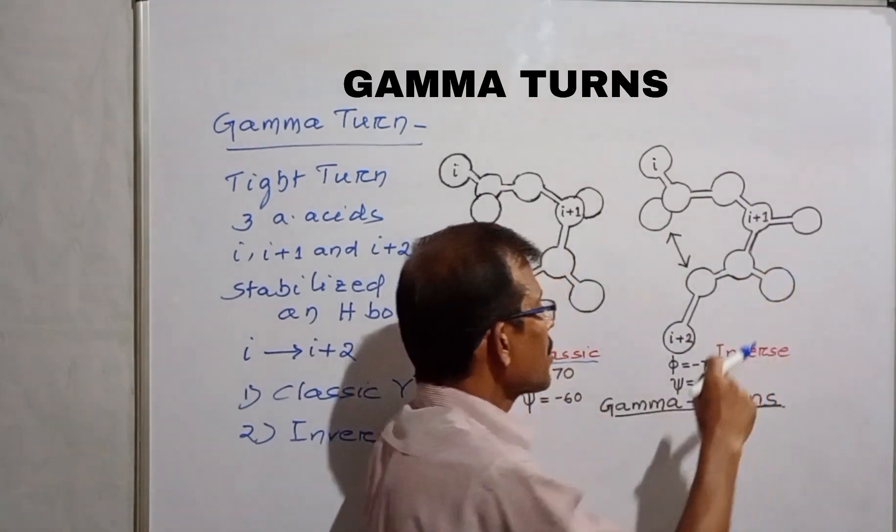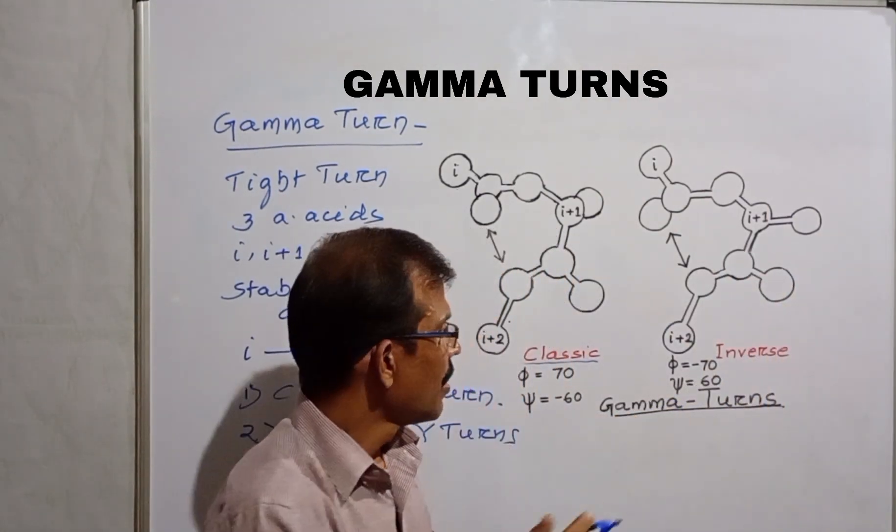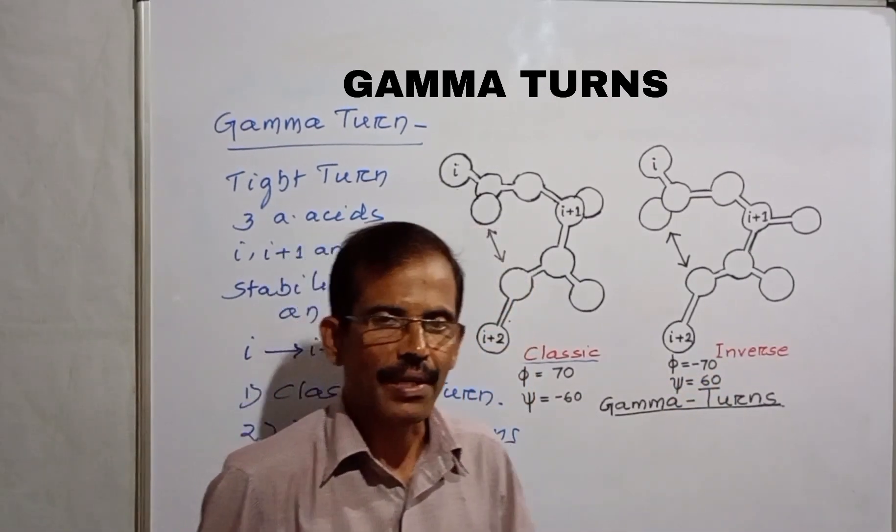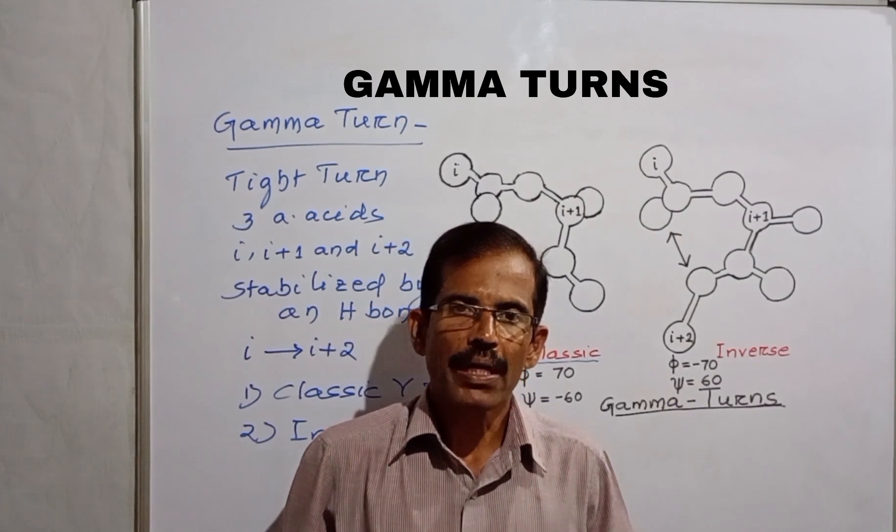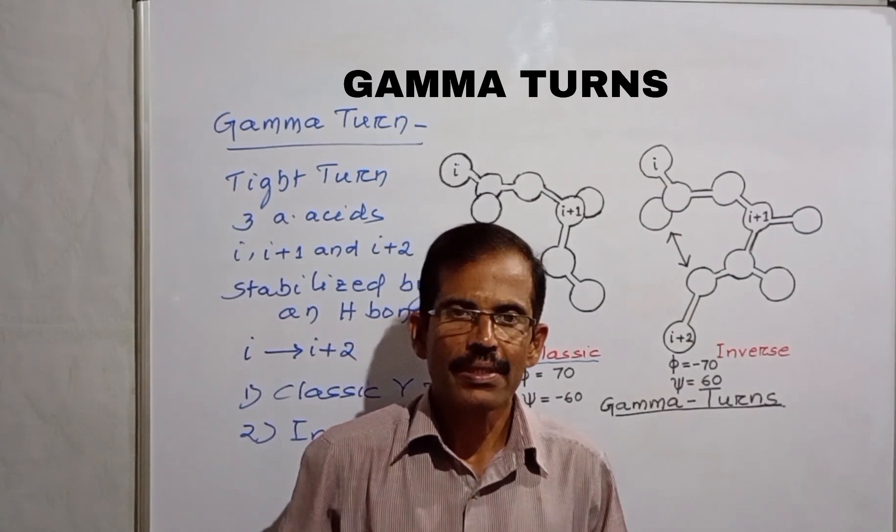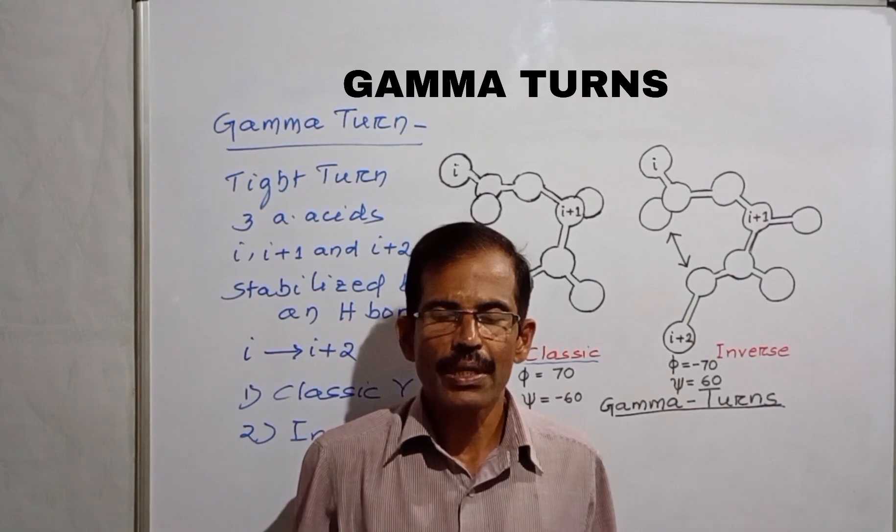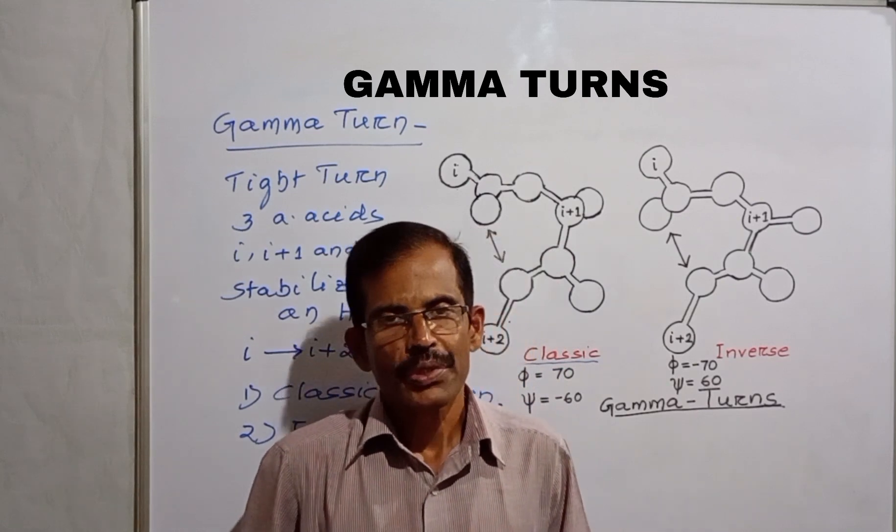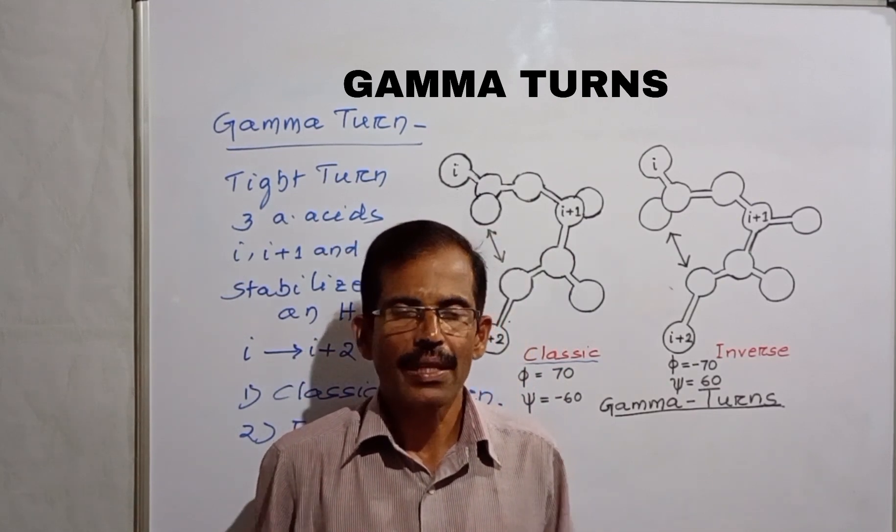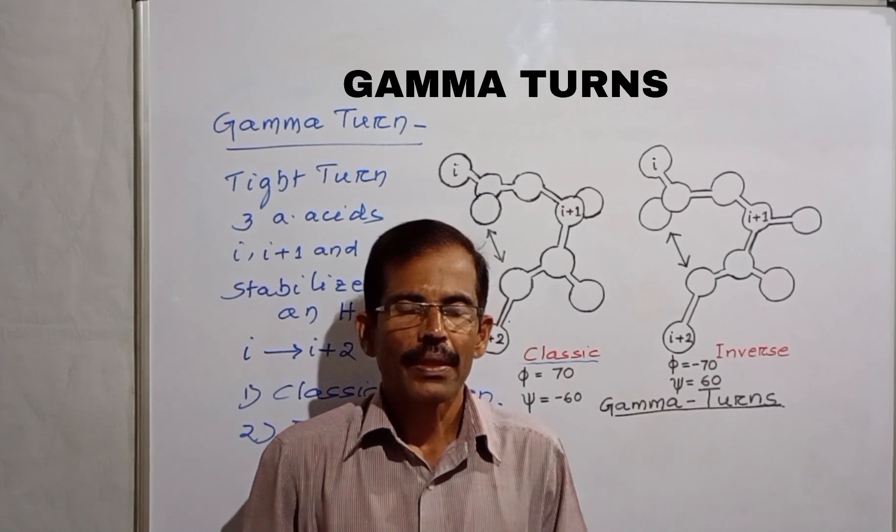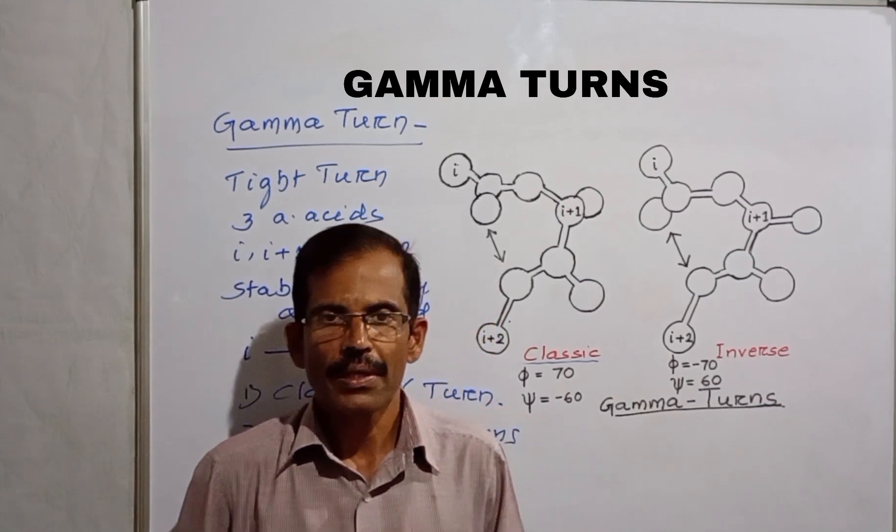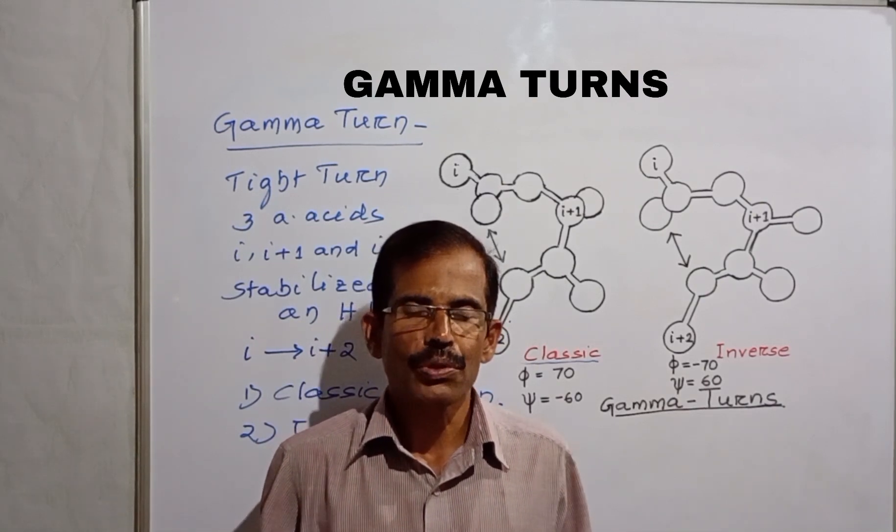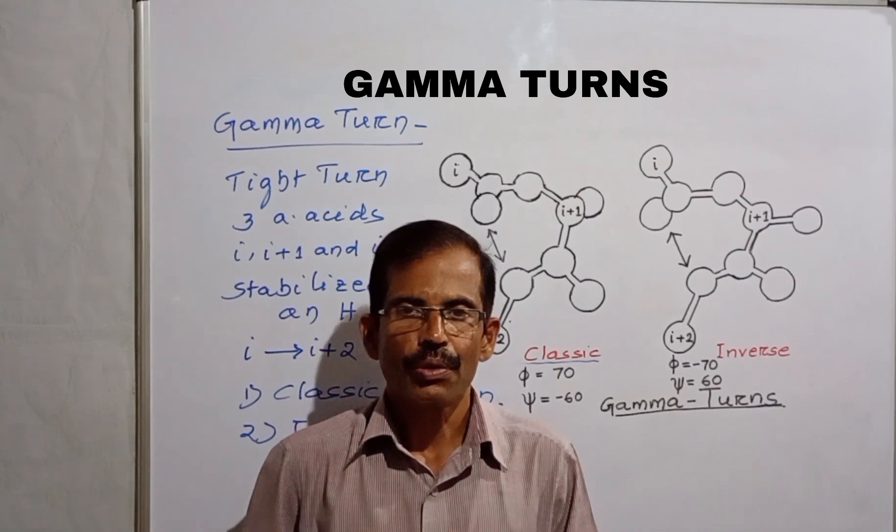The second type of Gamma Turns is Inverse Turns for which Phi is equal to minus 70 and Psi is equal to 60. Inverse Gamma Turns are more common in proteins. Usually, they are not associated with the reversal in the direction of the polypeptide chain. Such turns give rise to kinks in the polypeptide. They are considered as an intermediate in folding and therefore stabilizing strands before the formation of beta-pleated sheets.